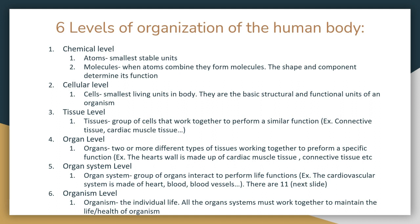Just to recap the six levels: chemical level has the atom, the smallest stable unit; atoms combine to form molecules. The cellular level — the cell is the smallest living unit and the basic structural and functional unit. A group of cells forms the tissue level. Two or more tissue types working together form an organ. A group of organs performing a life function is an organ system, like the cardiovascular system with the heart, blood, and blood vessels. All organ systems together make up the organism.